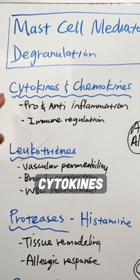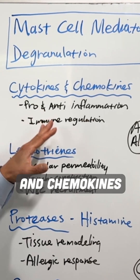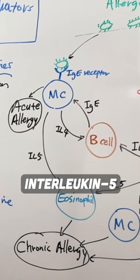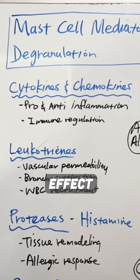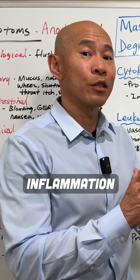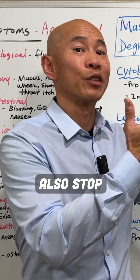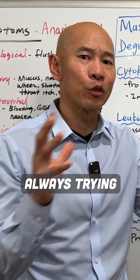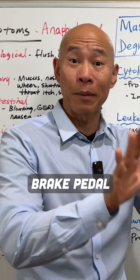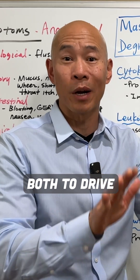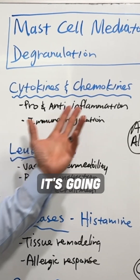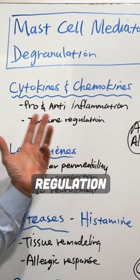First are the cytokines and chemokines, like interleukin-4 and interleukin-5, which have pro- and anti-inflammatory effects. So they can start inflammation, but they can also stop it. Your body is always trying to balance things out — like a gas pedal and a brake pedal. You need both to drive a car. This is how the body reaches homeostasis, essentially leading to immune regulation.